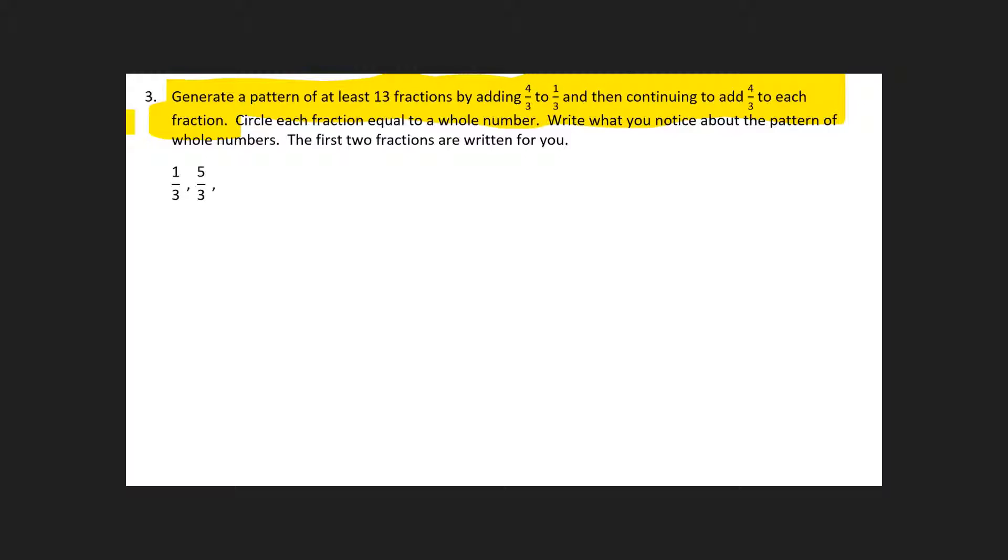They actually did the first one for us. 1 third plus 4 thirds is 5 thirds. Keep going: 9 thirds, 13 thirds, 17 thirds, 21 thirds, 25 thirds.